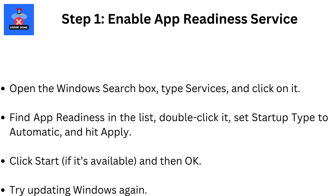Step 1: Enable App Readiness Service. Open the Windows search box, type Services, and click on it. Find App Readiness in the list, double-click it, set Startup Type to Automatic, and hit Apply. Click Start, if it's available, and then OK.